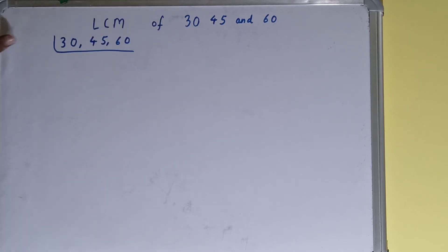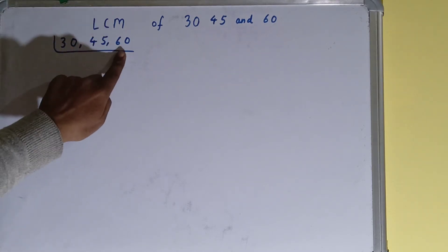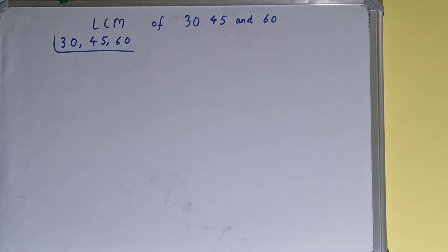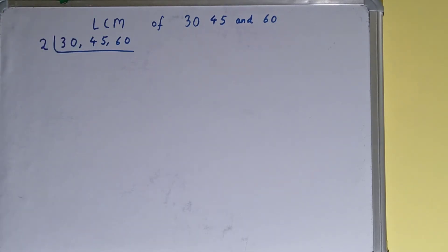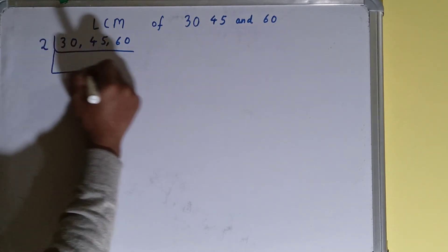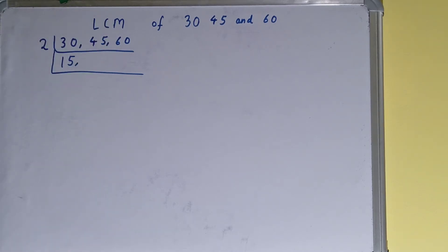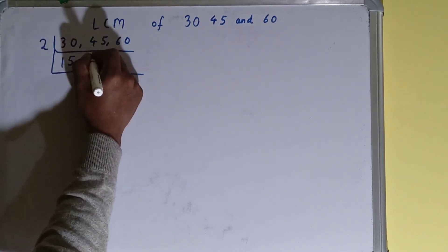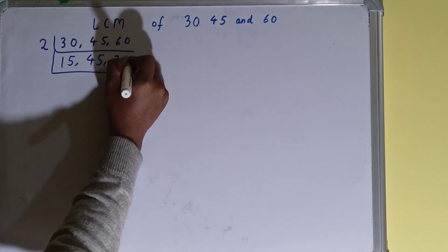The next thing we need to do is start with the lowest prime number, that is 2, and check if any of the numbers are divisible. The first and last numbers are divisible by 2, so we divide — because even if one of the three numbers is divisible, we always divide. So 30 becomes 15, 45 is not divisible by 2 so we copy it down, and 60 becomes 30.